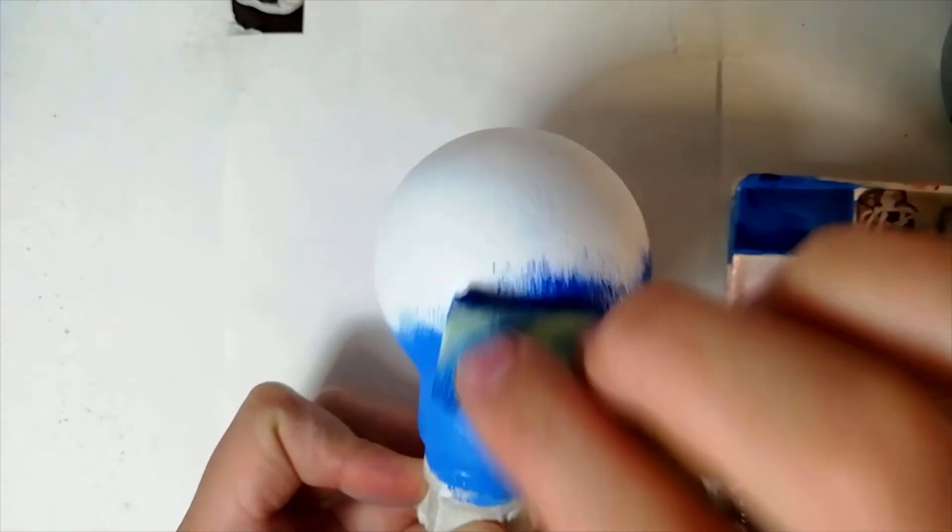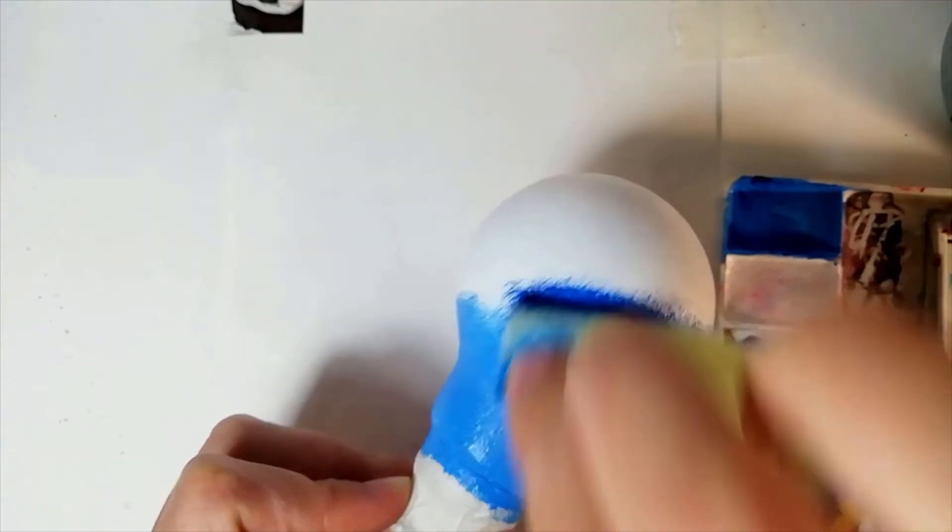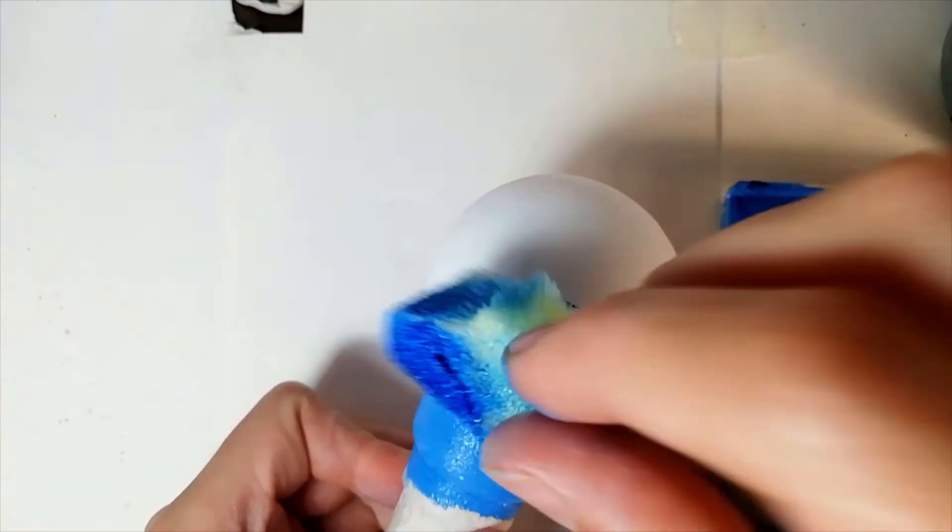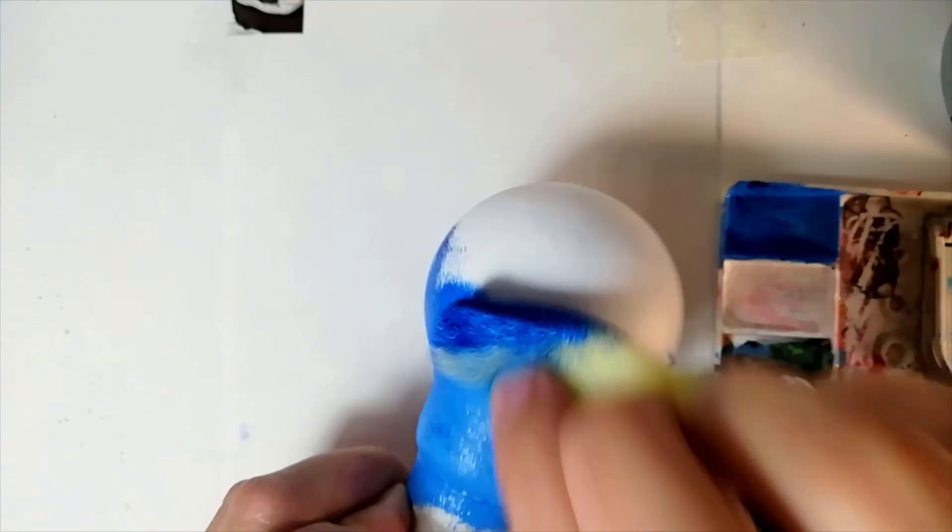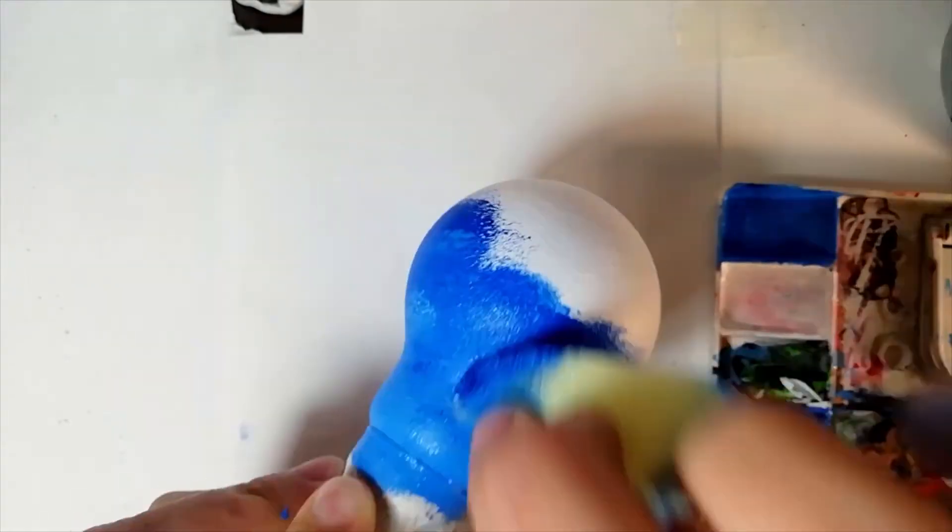As you can see, I'm blending using just one sponge without cleaning it between layers. I personally find this quite a good method to use when blending with sponges, as it allows the colors to mix together a bit easier.